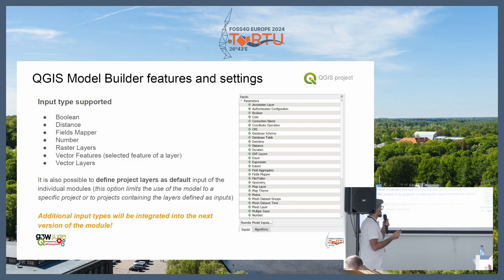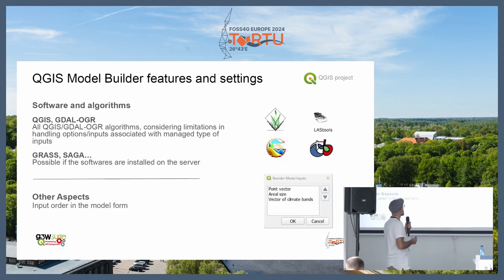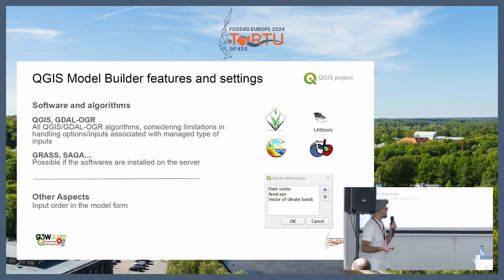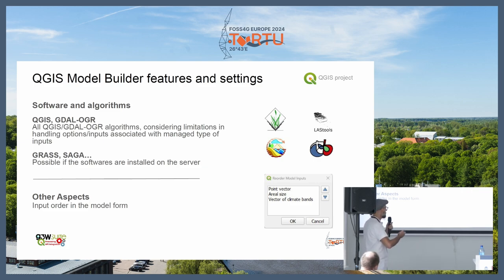It's possible to define the project layers as defaults, which naturally depends on the project you want to associate your model with. In the next release, we plan to upgrade this input support. For algorithms, every QGIS and GDAL/OGR native algorithm is supported thanks to QGIS server and the PyQGIS API. Additionally, GRASS, SAGA, and third-party algorithm applications can also be used, provided the software is installed inside the server with the GSTW suite. We also translated the possibility to define the ordering of inputs in your input form.